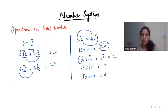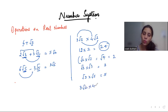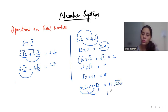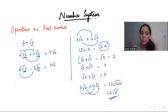So 12 into 2 gives me 24. Or if I have 3 root 2 into 4 root 3, I multiply the whole numbers: 3 into 4 is 12, and the roots go together under one root: 2 into 3 gives root 6. So my final answer is 12 root 6. While multiplying, keep whole numbers together and roots together.